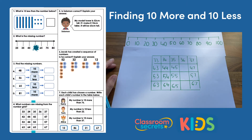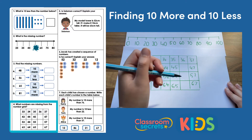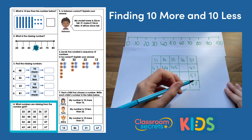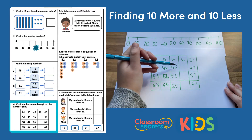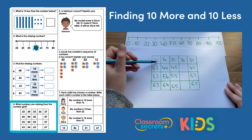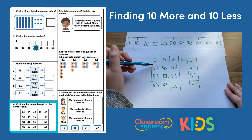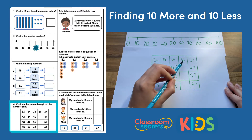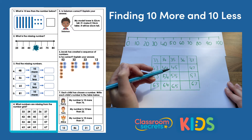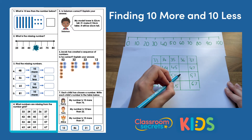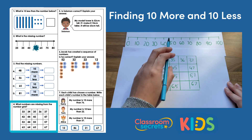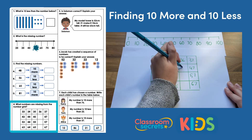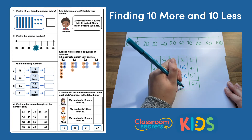Okay the next question, question number four — what numbers are missing from the grid? This is part of a hundred square. It starts at 33 and ends at 67. The columns show how each number goes up in 10 each time, the ones digit staying the same but the tens increasing by one 10 each time: 33, 43, 53, 63 — and it's the same for every number. We've got 36, so the six digit is always going to stay the same but we go up in tens: 36, 46, 56, 66. And we've completed our grid.